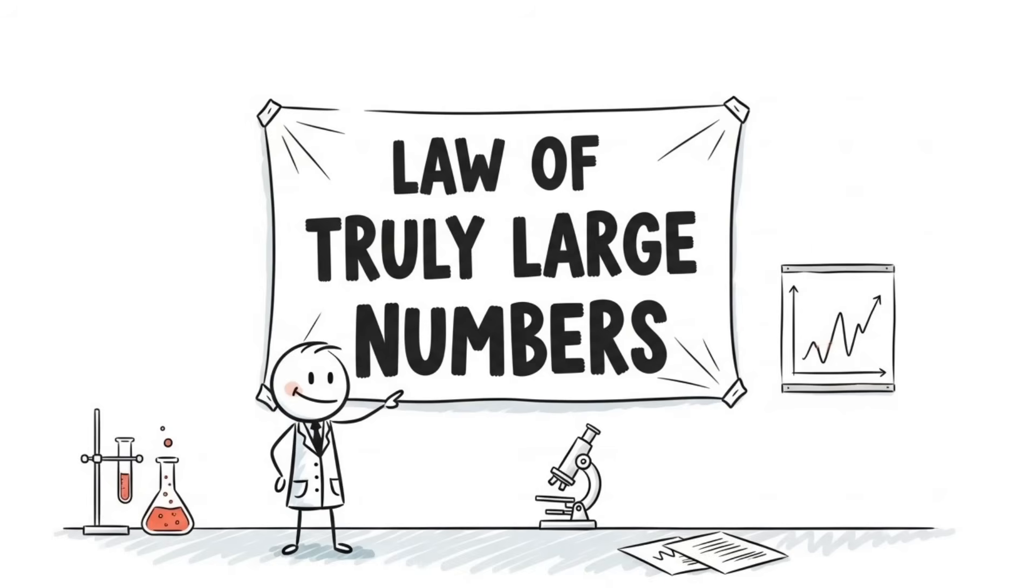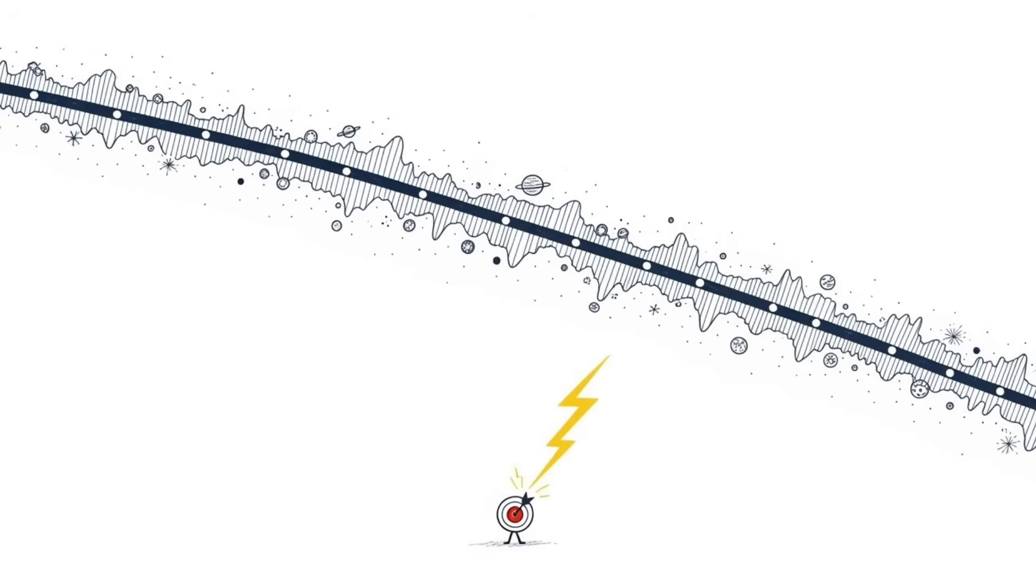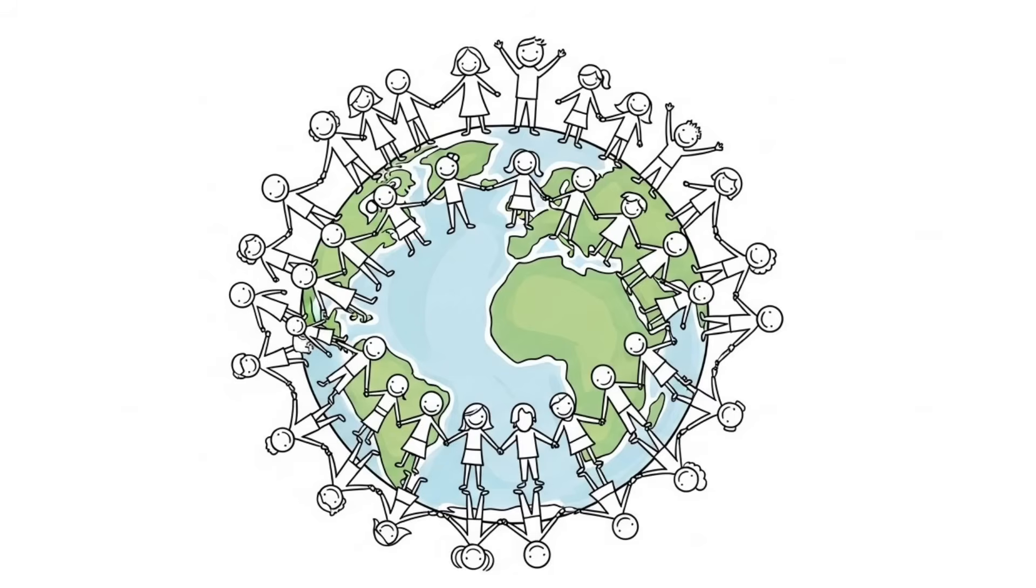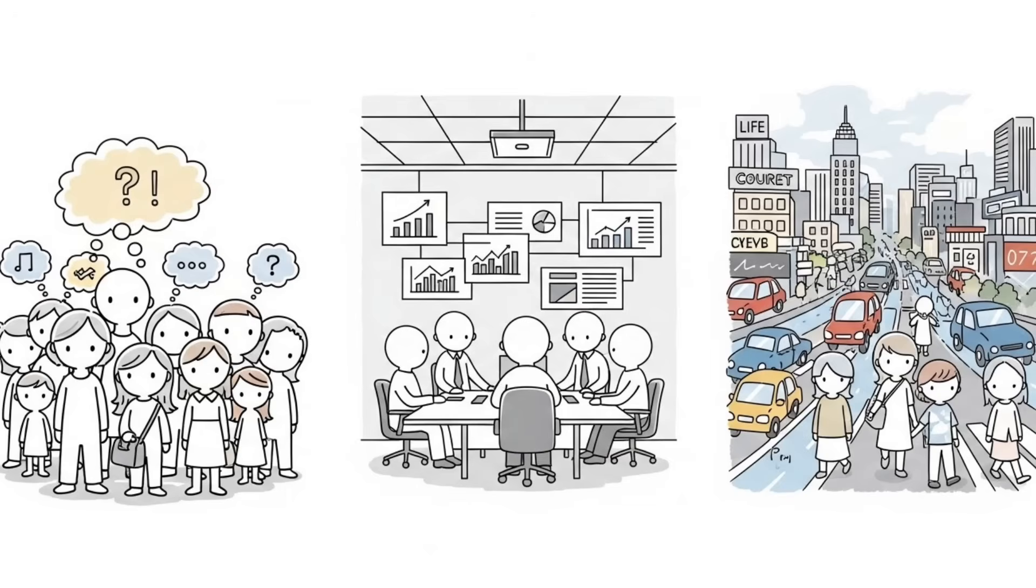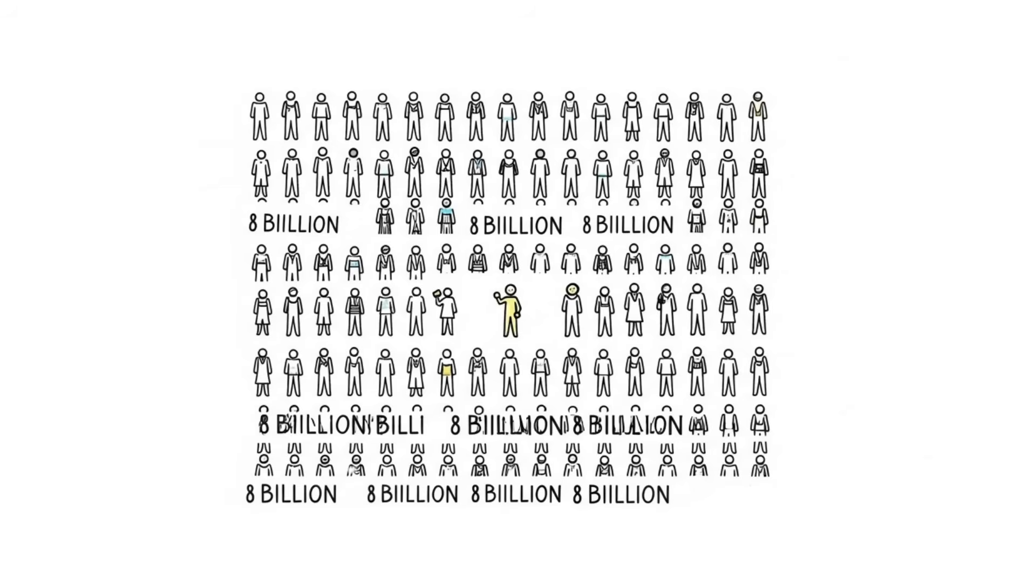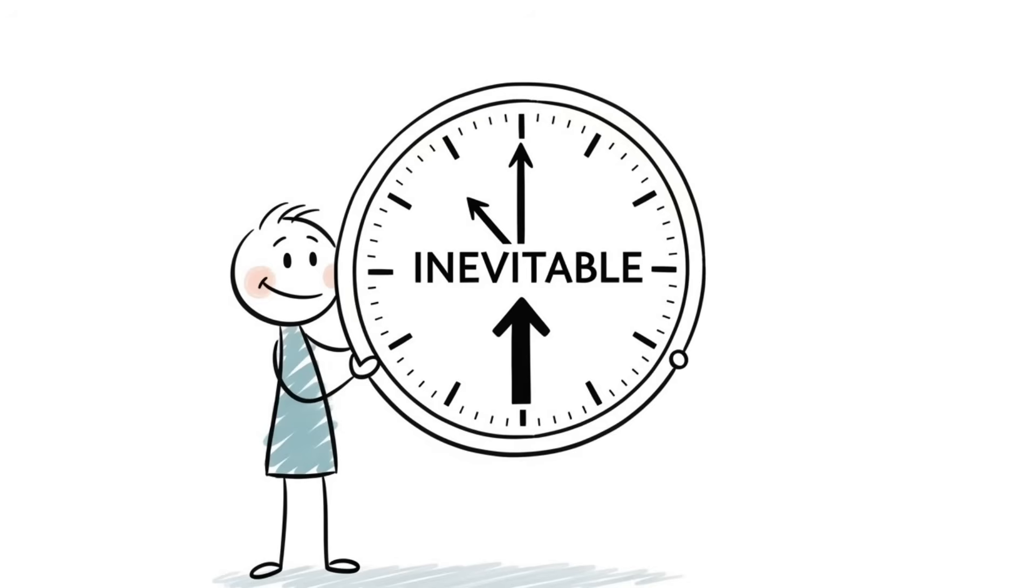Statistician calls this the law of truly large numbers, where seemingly improbable things happen given massive scale. There are over 8 billion people having dreams, making decisions, having lucky breaks, and living through random moments every second. That one in a million coincidence stops being rare when you multiply it by 8 billion daily events. It becomes inevitable.